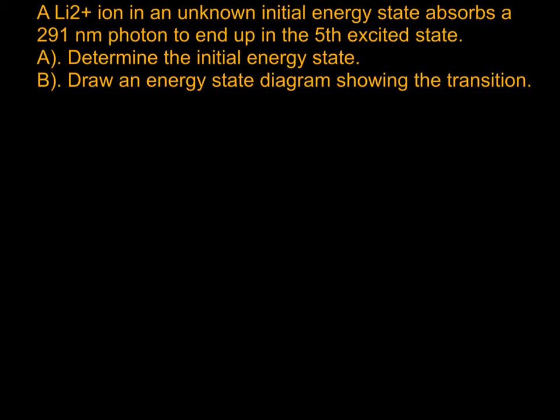Here's another, slightly harder problem using the Bohr equation to figure out something we don't know about a system — it's a spectroscopy problem. In this one, we have a lithium 2+ ion in an unknown initial energy state. It's going to absorb a 291 nanometer photon and end up in the fifth excited state. We're going to first determine the initial energy state, and then second, draw an energy state diagram showing this transition.